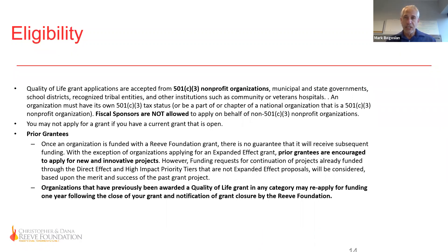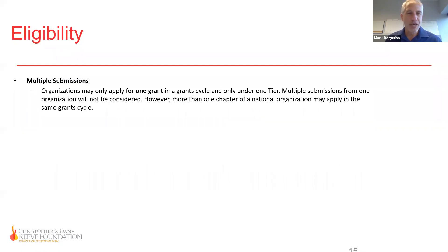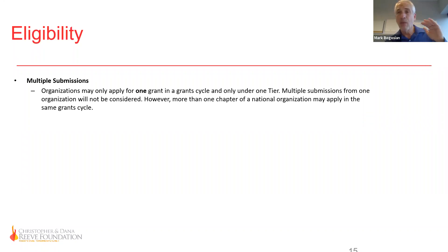Organizations previously awarded a quality of life grant in any category may apply for funding one year following the close of their grant and notification of grant closure by the Reeve Foundation. Multiple submissions are not considered — your organization may apply for only one grant in a grant cycle and only under one tier. However, more than one chapter of a national organization can apply in the same grant cycle.